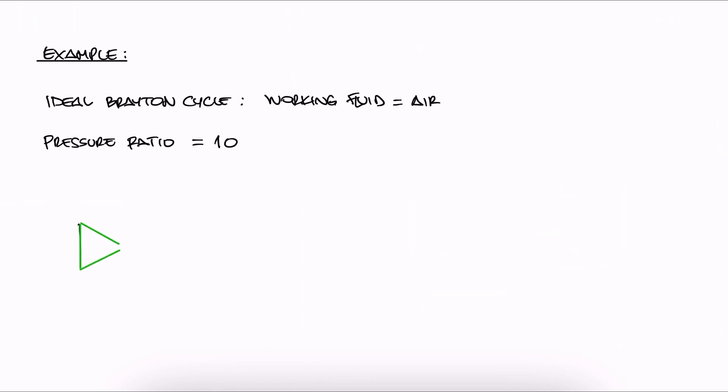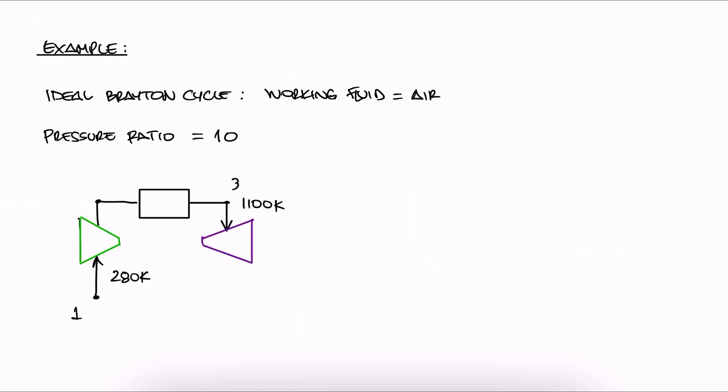The air enters the compressor at 280 Kelvin and the turbine at 1100 Kelvin. Considering that specific heats vary with temperature, what is the specific work required to run the compressor? Remember to pause here to try to solve this problem yourself before watching the solution.